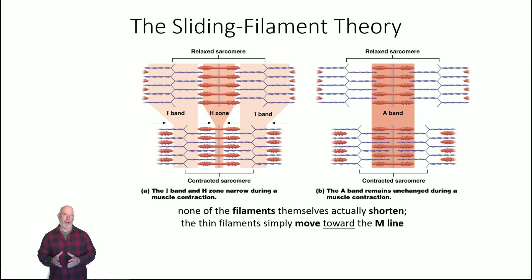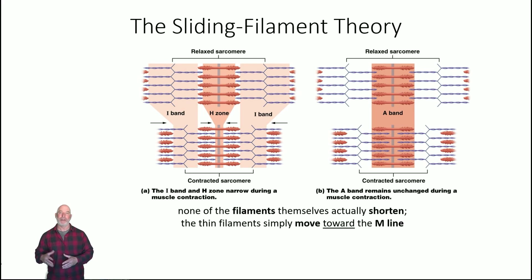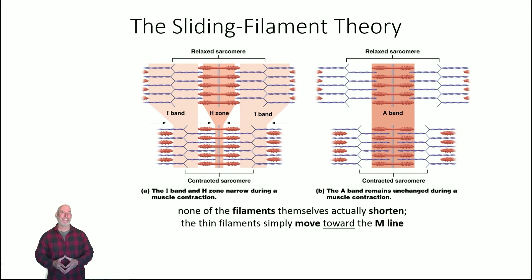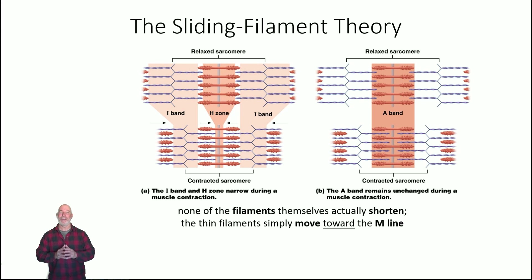Stay tuned for part 5, where we'll talk about how the sarcomere actually shortens based on a signal from your motor neuron. That's where we'll cover T-tubules and the cisternae, calcium ions, and how they affect troponin and tropomyosin, as well as the role of ATP. That's where we get into the nuts and bolts of how it actually works — so stay tuned, and stay curious.